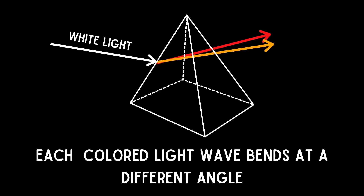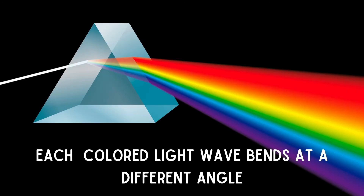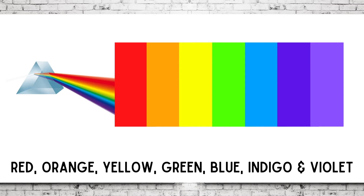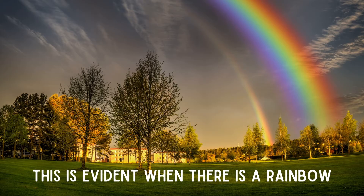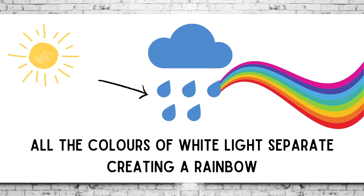Each colored light wave bends at a different angle, which makes the white light separate into something we call ROY-G-BIV — short for red, orange, yellow, green, blue, indigo, and violet. This is evident when there is a rainbow. Water droplets in the atmosphere bend light, and all the colors of white light separate, creating a rainbow.